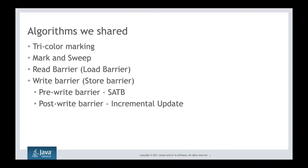Barriers are small pieces of code inserted by the JIT compiler on behalf of the garbage collector. The analogy: I am cleaning the home (GC running) and my kids are throwing garbage (application running). Whenever they throw something, I put a tag mark — the JIT compiler inserts a small code there so the GC knows what is coming in.